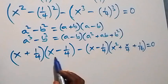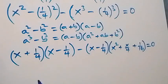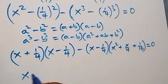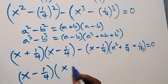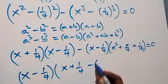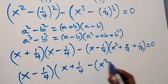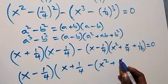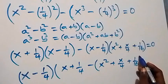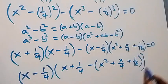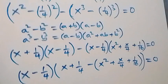We can factor out (x minus 1 over 4) as a common factor, giving us (x minus 1 over 4) times the bracket: (x plus 1 over 4) minus (x squared plus x over 4 plus 1 over 16), equals zero.